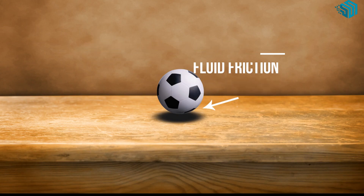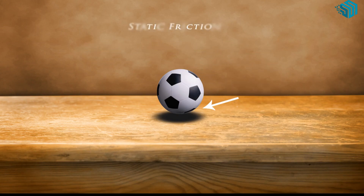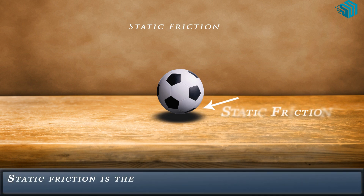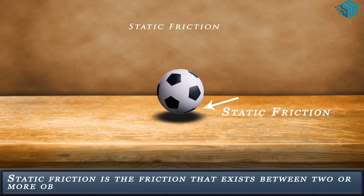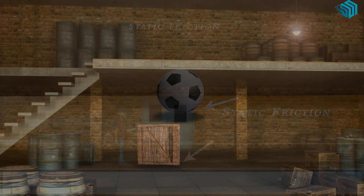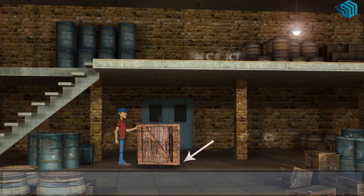Beginning with static friction. Static friction is the friction that exists between two or more objects that are not moving relative to one another. For example, a static ball on the ground.